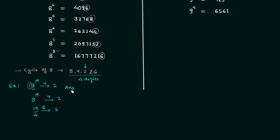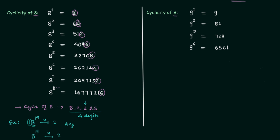This implies 18 raised to power 19 will also have 2 at the unit place. So this is the answer and this is the way to find out the digit at the unit place. Now we will discuss the cyclicity of 9. You can see the pattern at the unit place: first we have 9, then we got 1, again we have 9 and then we got 1. So the cycle of 9 is having only 2 digits, which are 9 and 1.